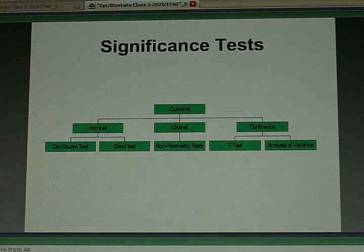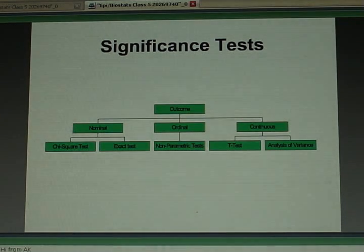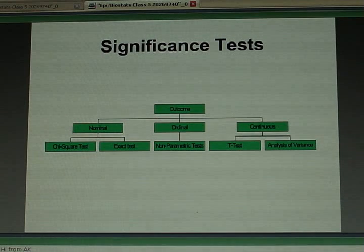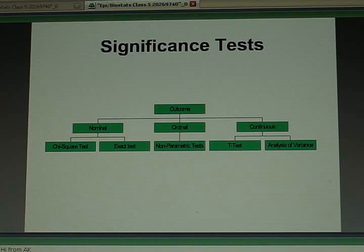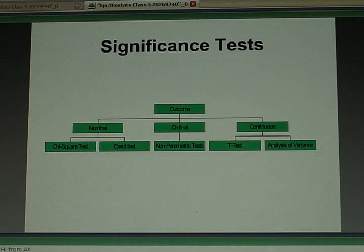If your outcome was continuous, like whether a particular treatment improves a particular biomarker as an early sign of disease progression, you might be doing t-tests, or you might be doing analyses of variance.